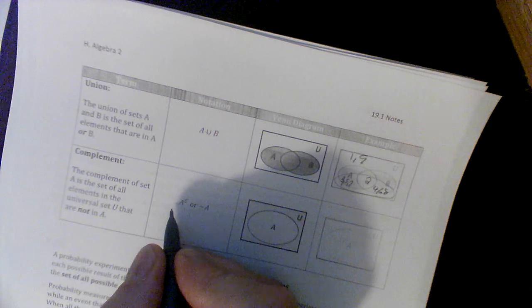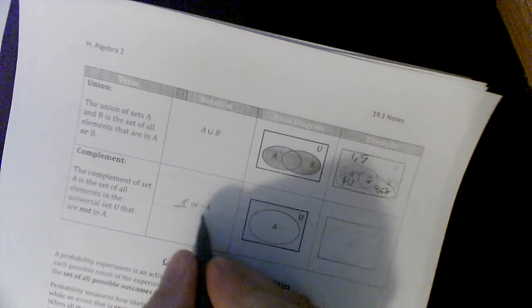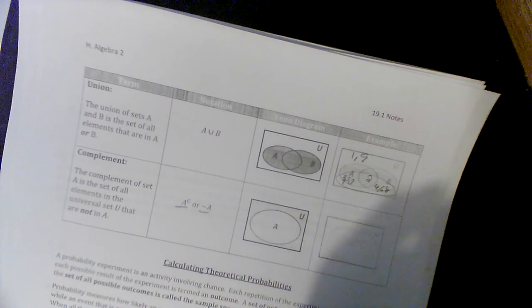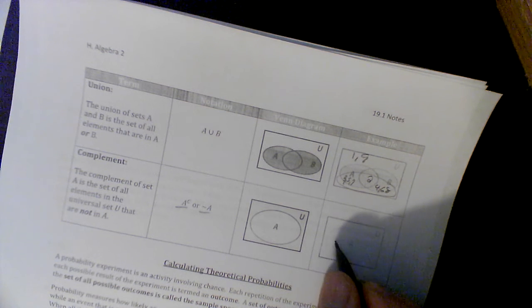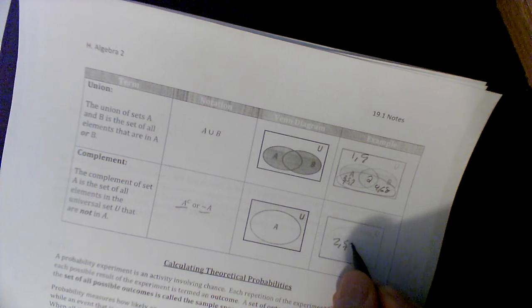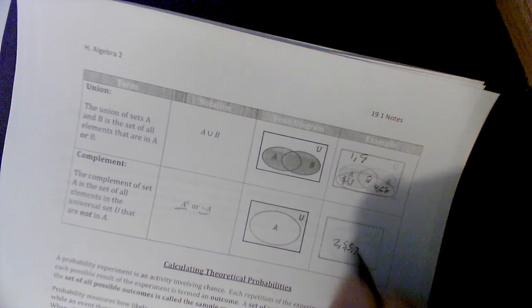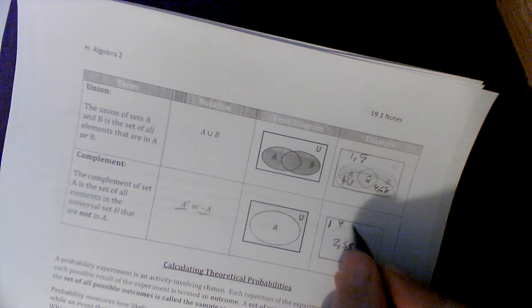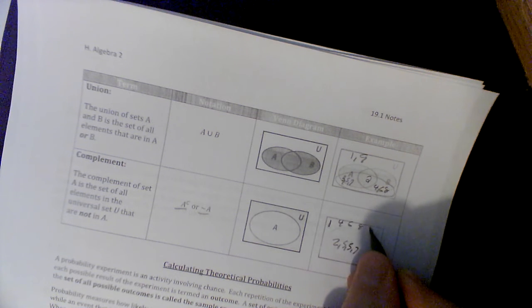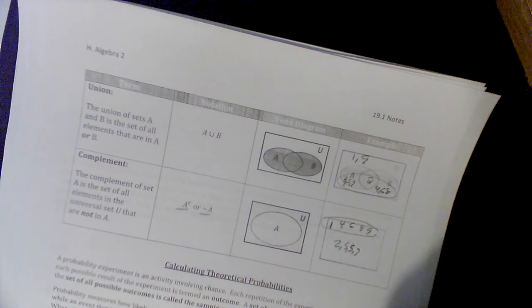And sometimes you get what's called a complement. What a complement - and there's two ways to write it - is everything not in set A. So the complement, if this was set A - 2, 3, 5, and 7 - the complement would be everything out here: 1, 4, 6, 8, and 9. The complement would be out here.